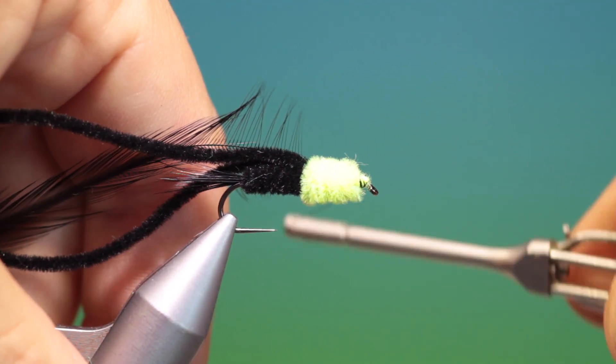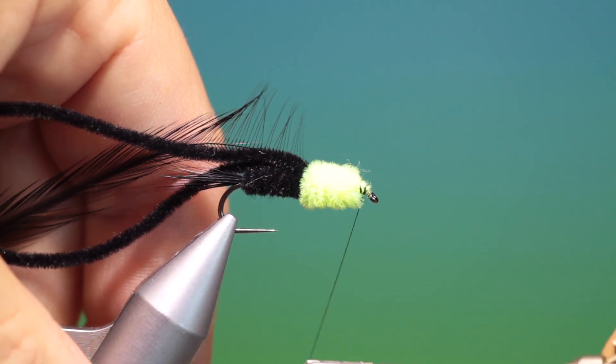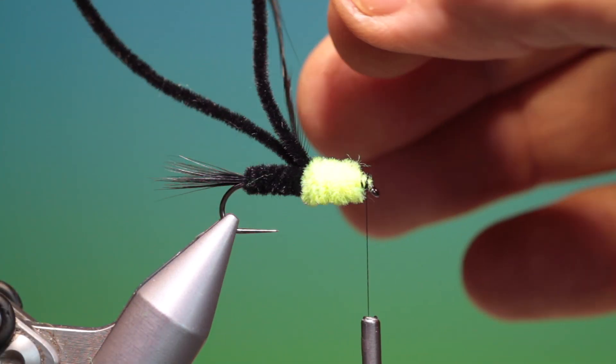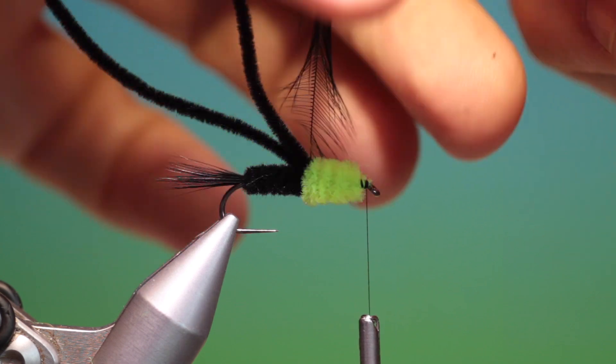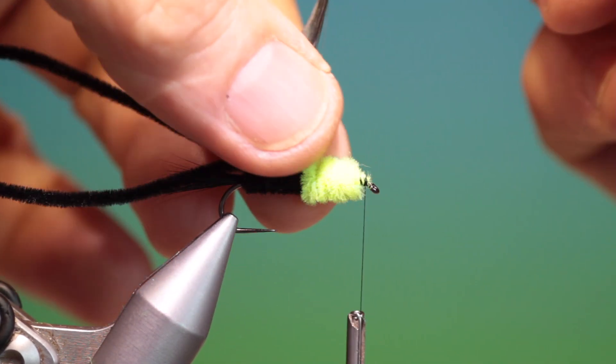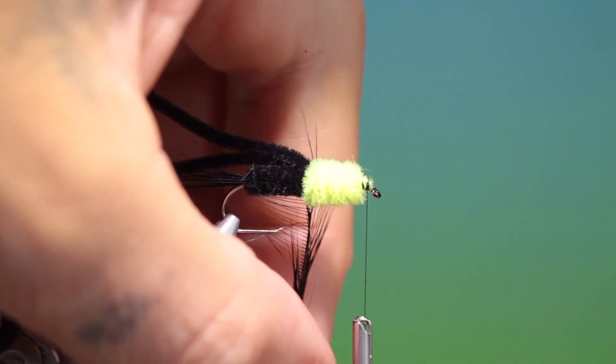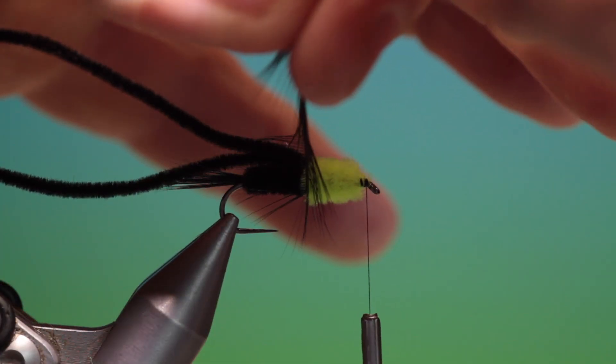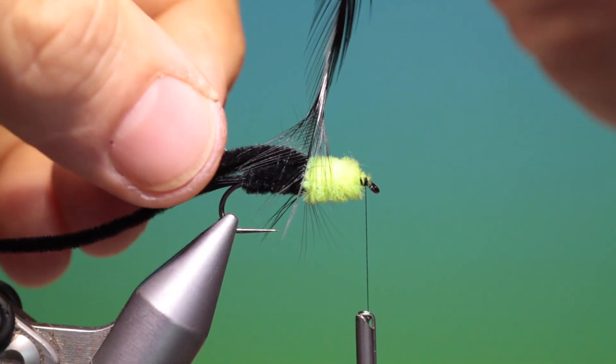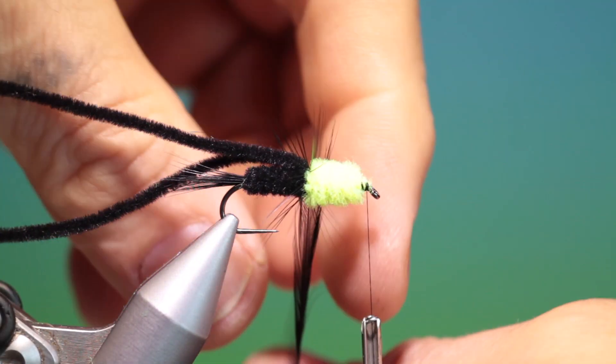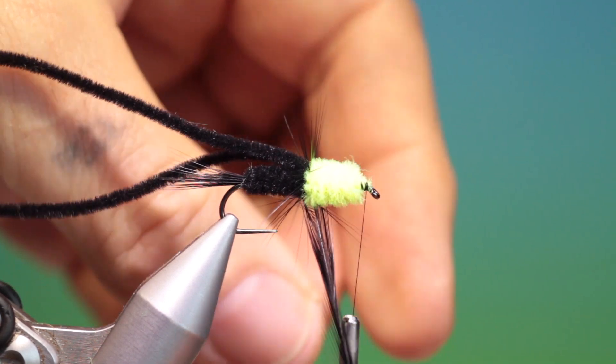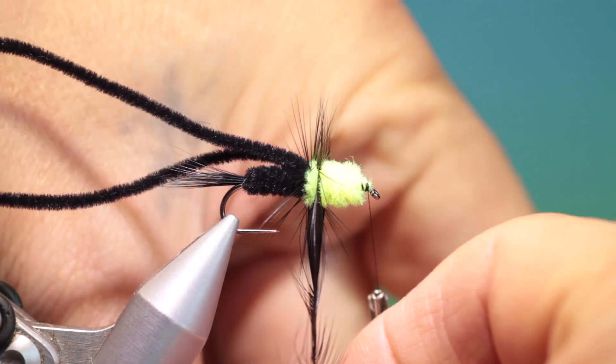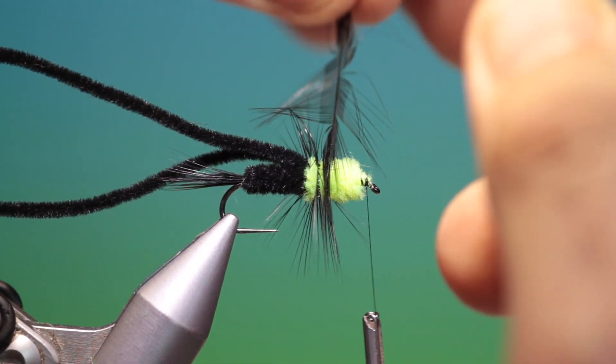Got stuck in the hook eye there. There we are, I'm out of it now. What we need now is we'll just fold back these fibers like this and we want to follow. This will be the legs. We want to follow the turns of the chenille so the hackle goes down in between as we go forward.